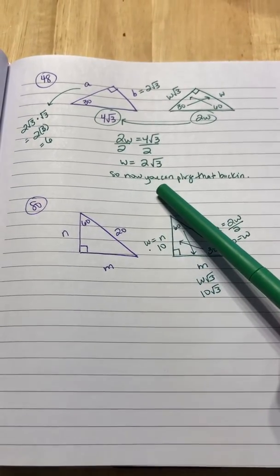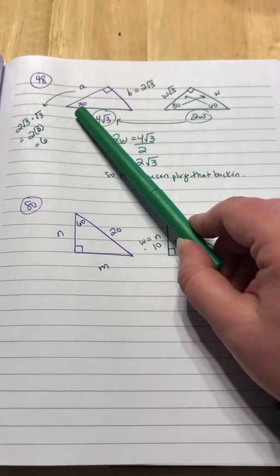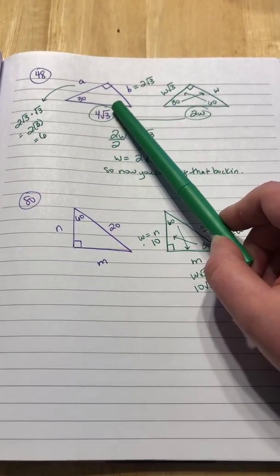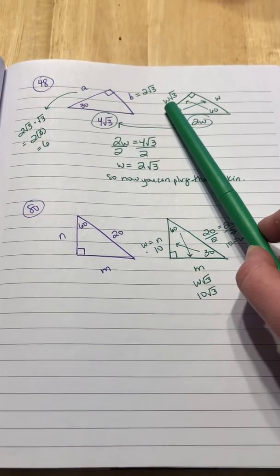So now you can plug that into all the w's. Across from 30 is your w, so 2 square root of 3. And across from 60 is going to be w square root of 3.